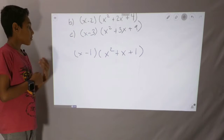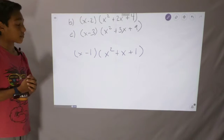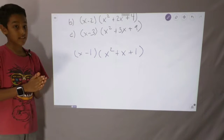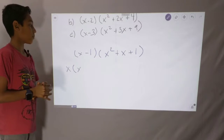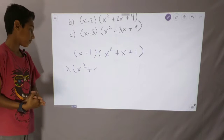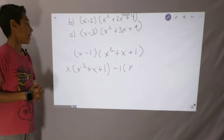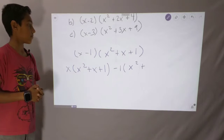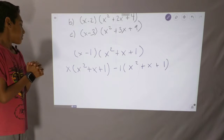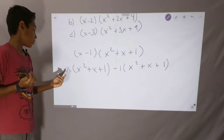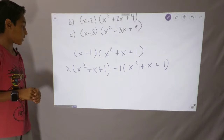If you multiply the whole thing at once, that would look complicated. So we'll just break it down into pieces. So we have x times x squared plus x plus 1, minus 1 times x squared plus x plus 1. We can do these one at a time. First, let's do x times x squared plus x plus 1.